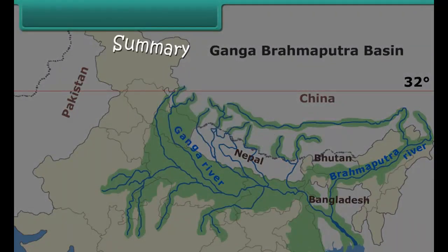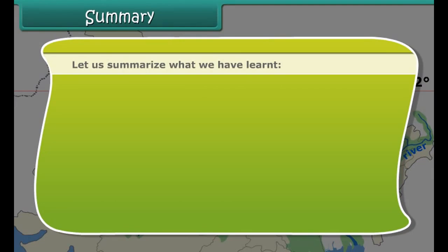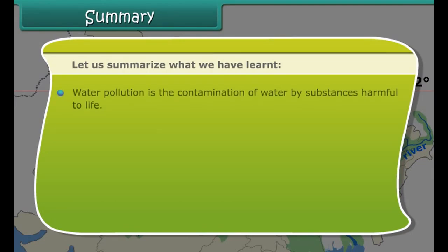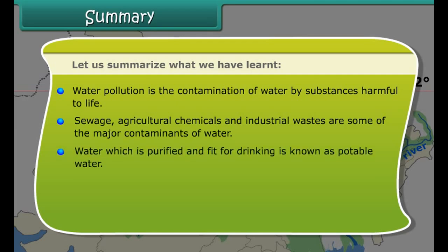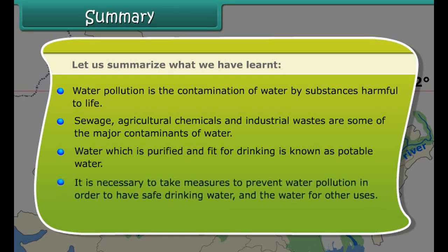Summary: Water pollution is the contamination of water by substances harmful to life. Agricultural chemicals and industrial wastes are some of the major contaminants of water. Water which is purified and fit for drinking is known as potable water. It is necessary to take measures to prevent water pollution in order to have safe drinking water and water for other uses.